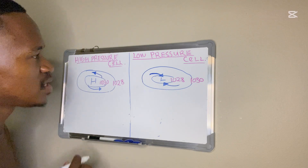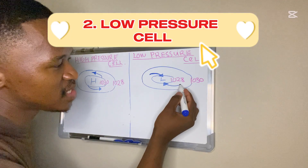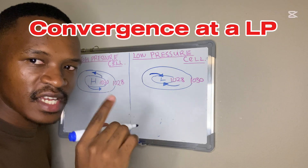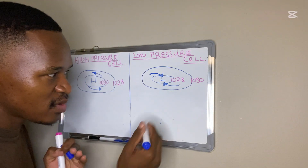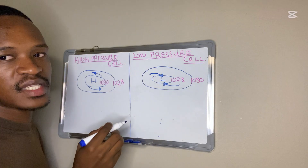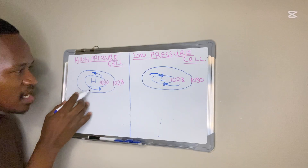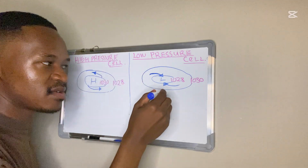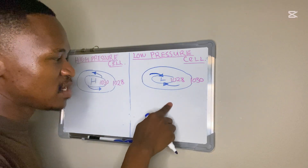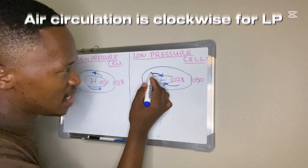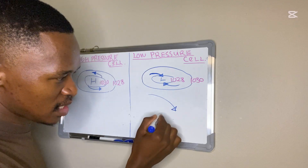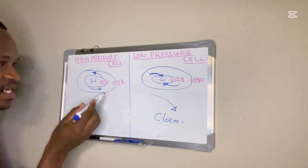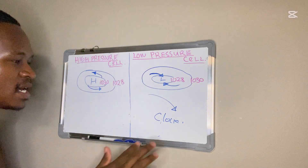Now let's compare with the low pressure cell. Look at the arrows — they are pointing towards the low pressure because when there's a low pressure the air converges, it comes together. The arrows point toward the center. For low pressure the air circulation is clockwise, whereas for high pressure the air circulation is anti-clockwise.